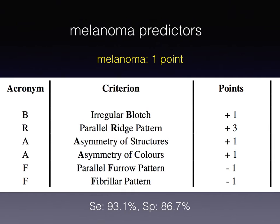Scenario one is quite easy: we apply our dermatoscope and we see a parallel ridge pattern. When we see a parallel ridge pattern, we can immediately set the diagnosis of melanoma. Calculating points, it would be immediately plus three. No question — this is a melanoma.